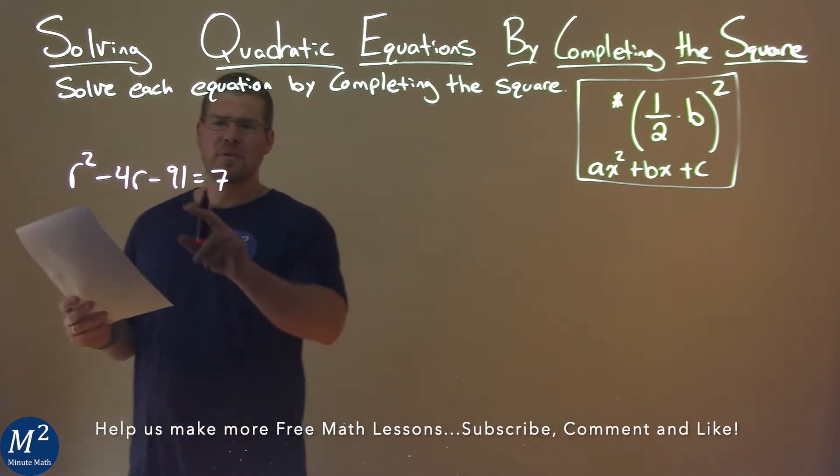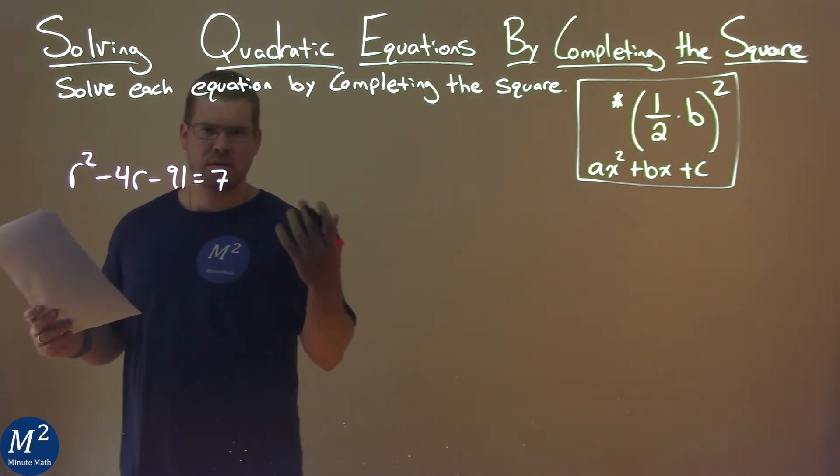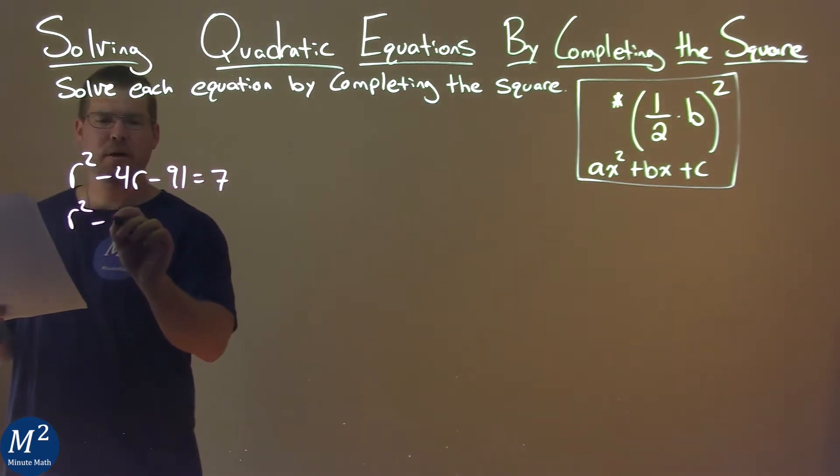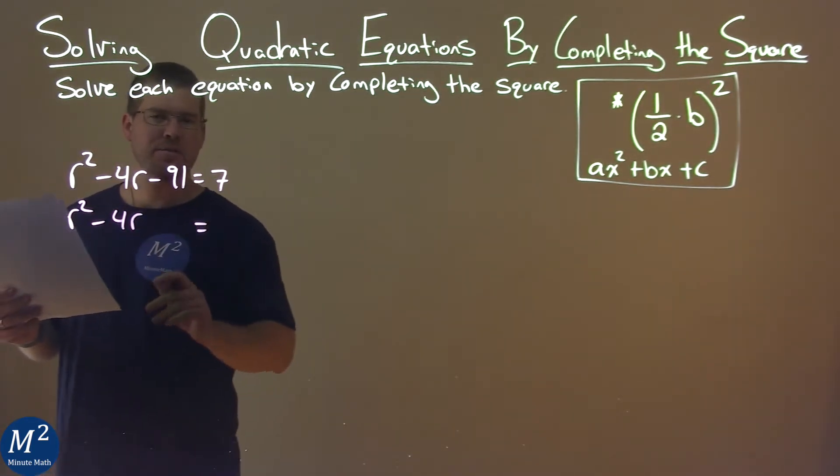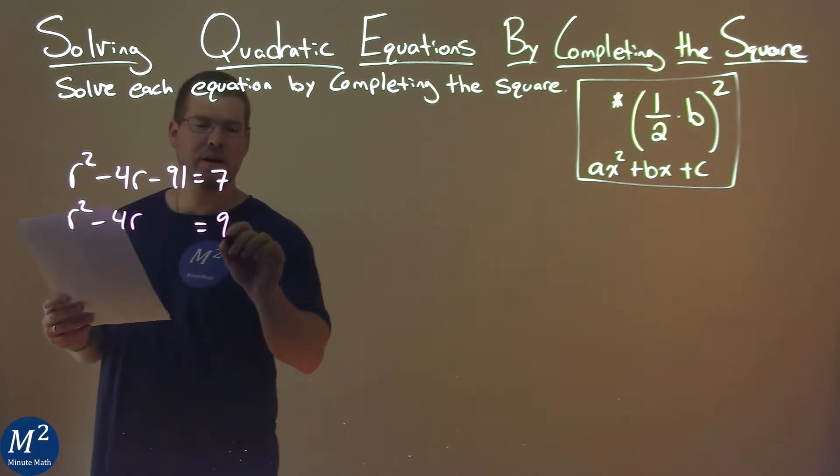The first thing I'm going to do is add 91 to both sides of the equation. So we have R squared minus 4R equals, I'm going to leave a space, and 91 plus 7 is 98.